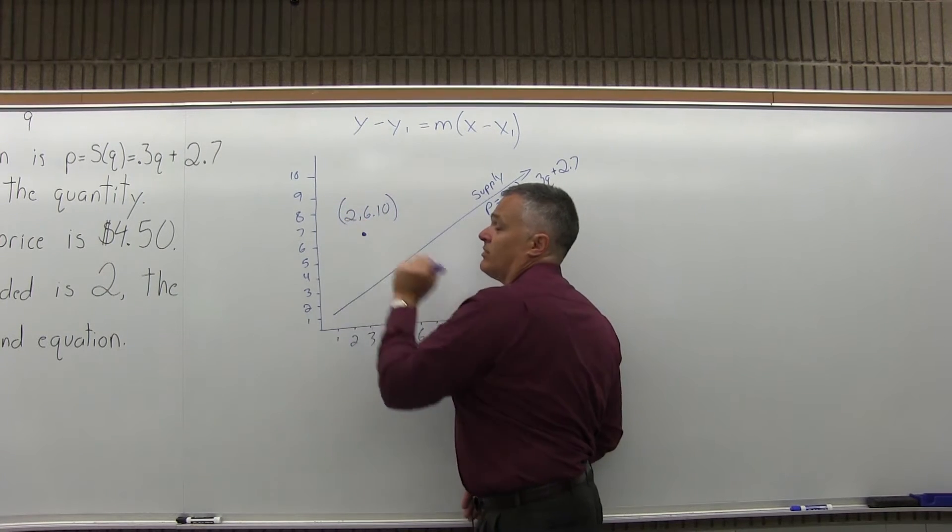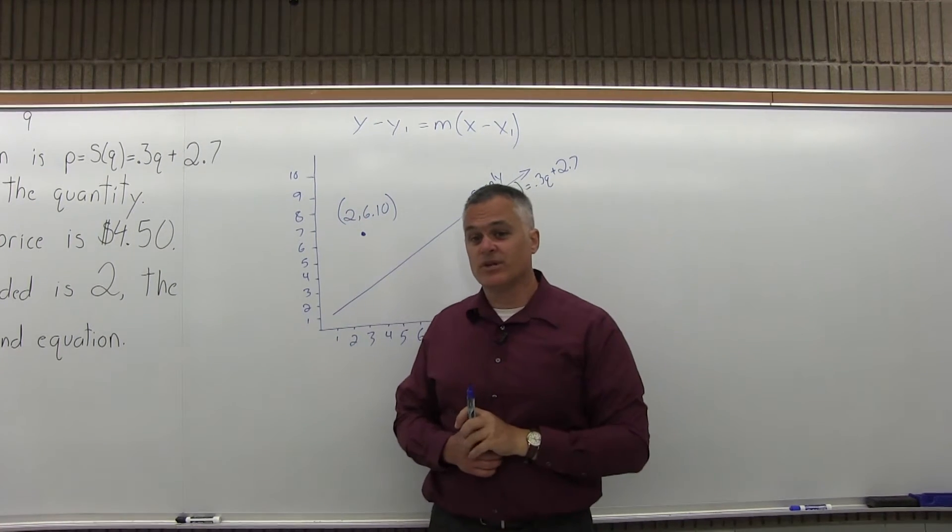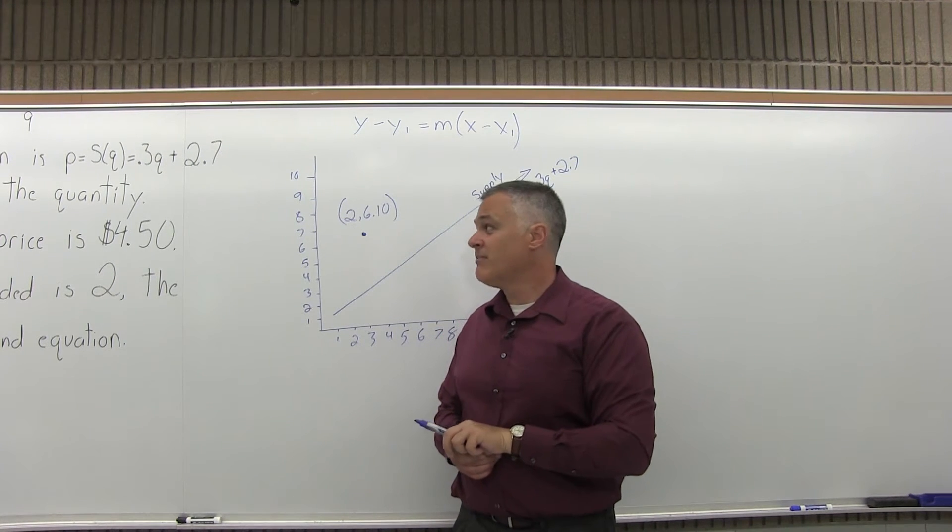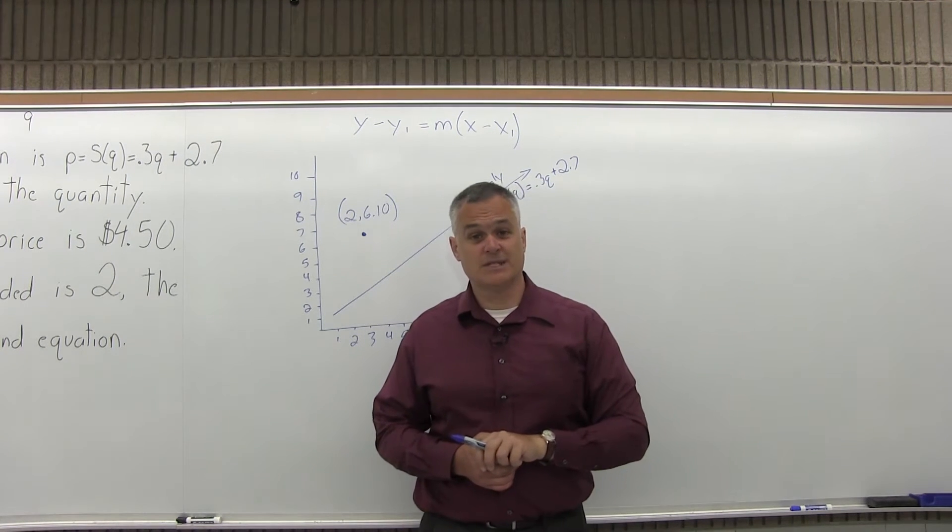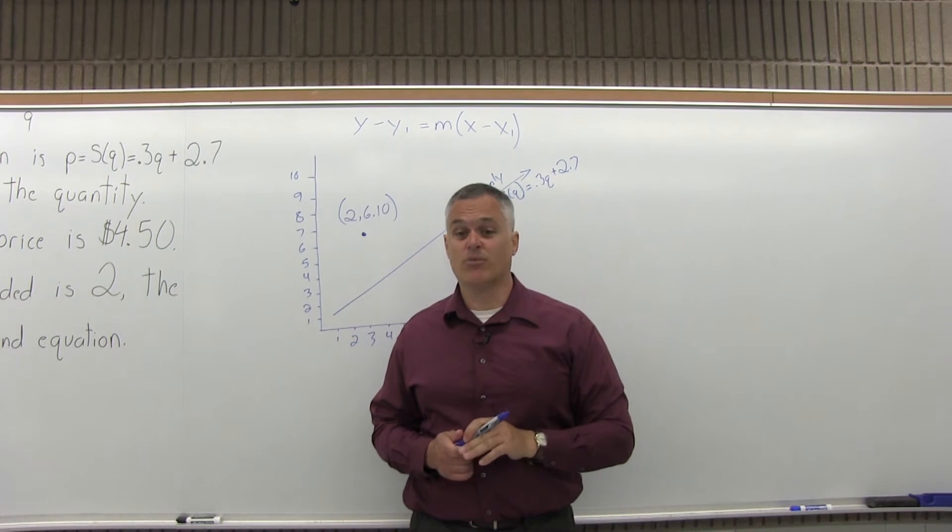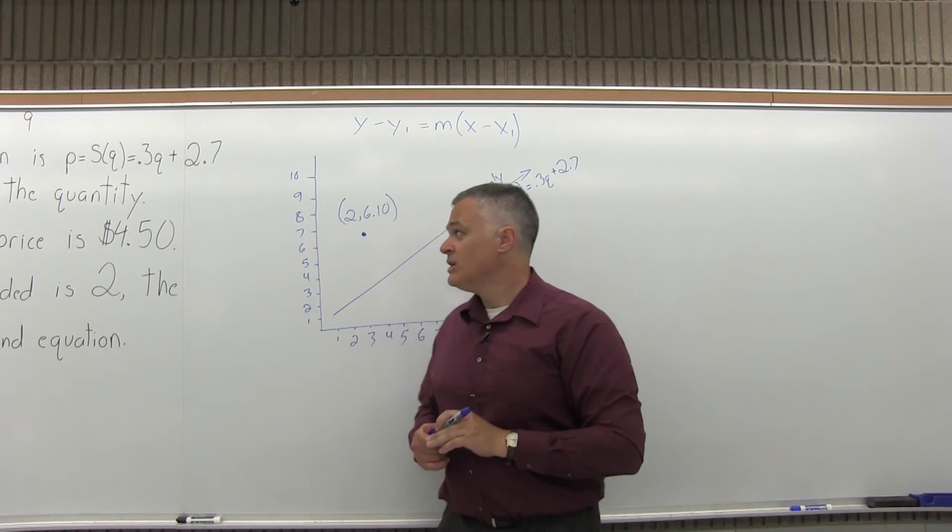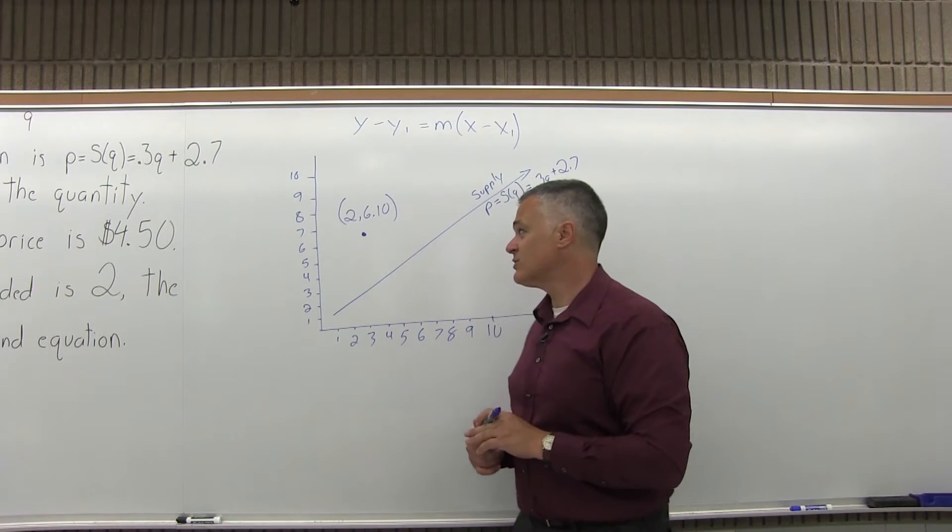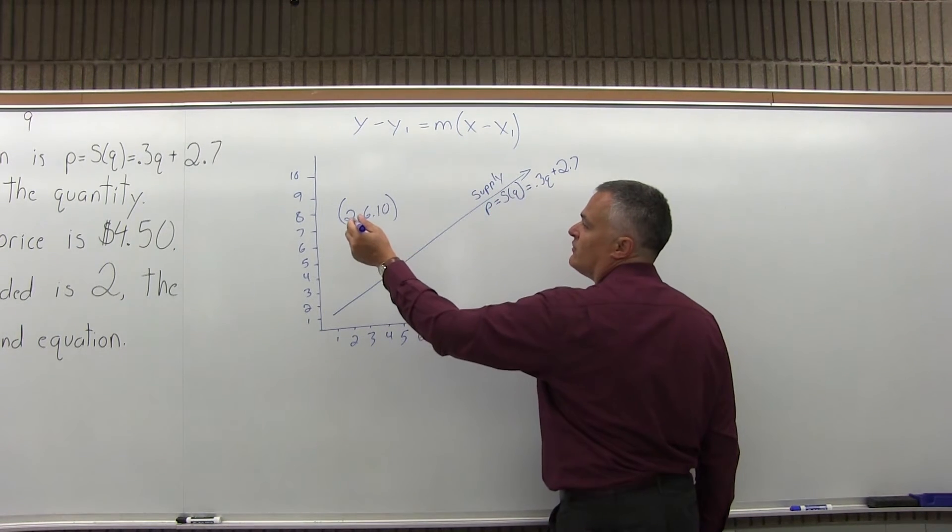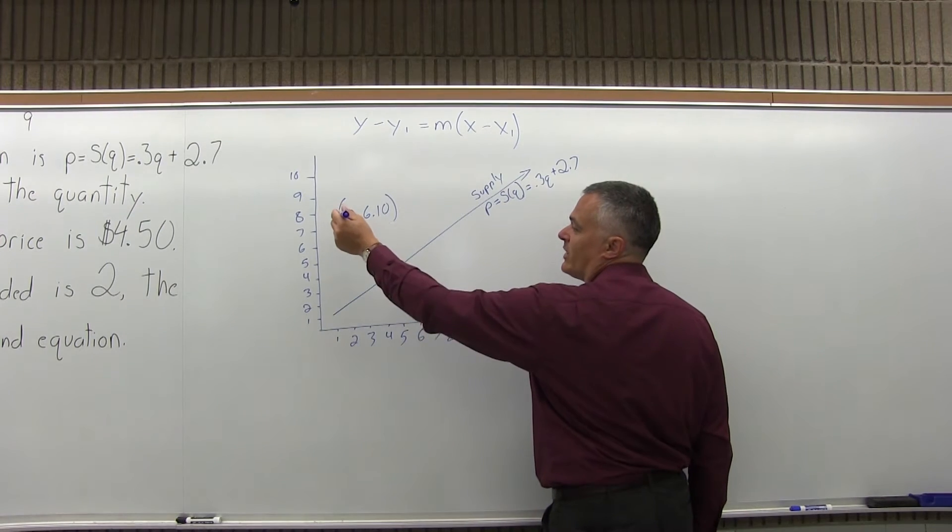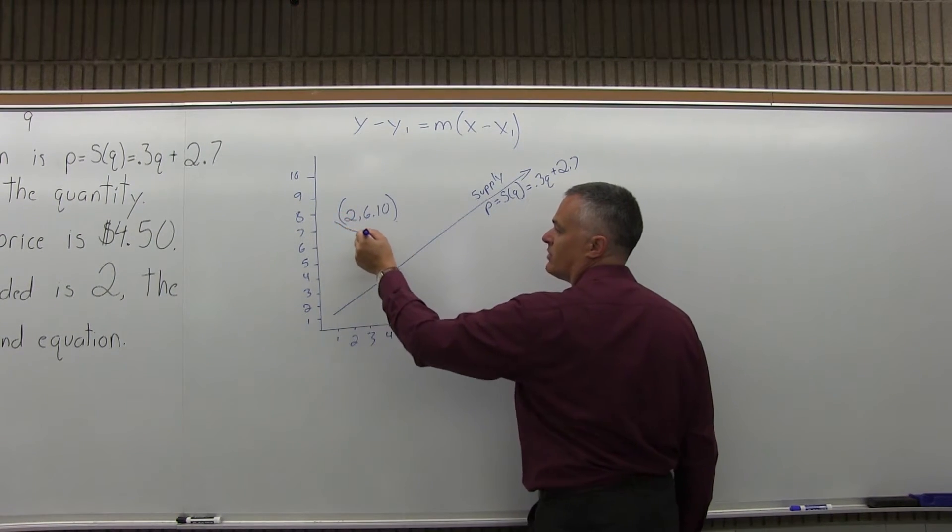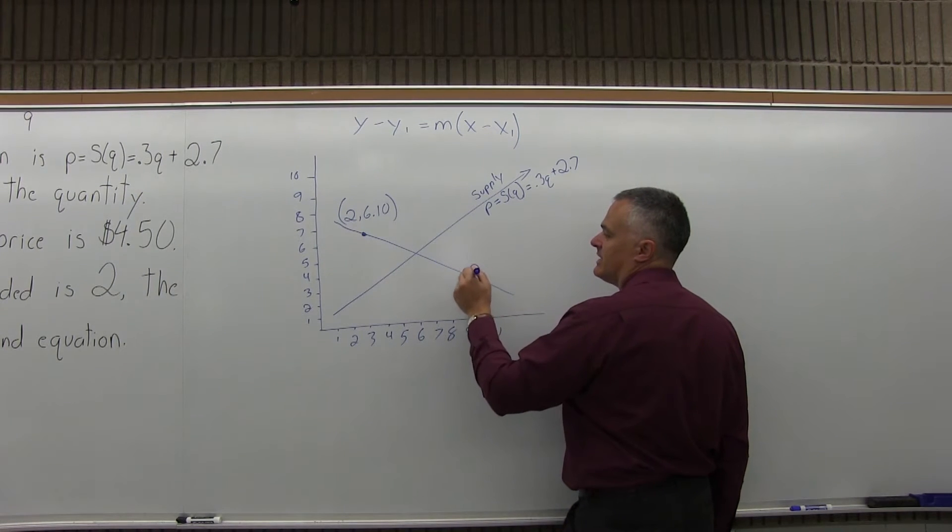We need to find the second point on the demand equation or the slope. The market price of $4.50 will give us our second point. The demand equation is going to go down as you go from left to right and pass through this point.